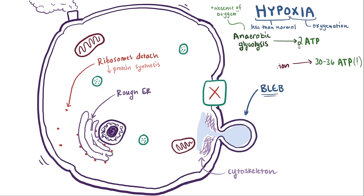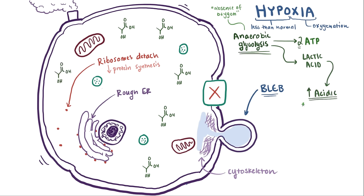But what also happens is it produces a byproduct called lactic acid, which lowers the pH inside the cell. This more acidic environment can denature or essentially destroy proteins and enzymes.